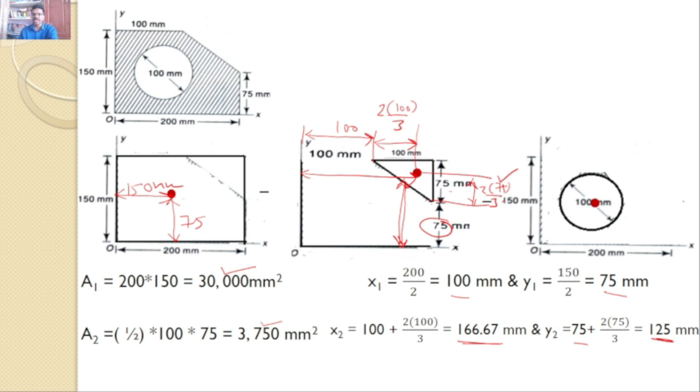Next coming to the circle. The diameter is now 100. So I can say A3, π by 4 times 100 squared, which gives the value of 7,853.96 mm squared. But coming to the centroid, we don't know this distance. We don't know this distance and also we don't know this distance. So for that, I am assuming that this centroid is xc and this centroid is yc.